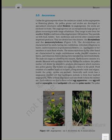Angiosperms are divided into two classes: the dicotyledons and the monocotyledons. The dicotyledons are characterized by seeds having two cotyledons, reticulate venation in leaves and tetramerous or pentamerous flowers, i.e. having four or five members in each floral whorl. The monocotyledons are characterized by single cotyledon seeds, parallel venation in leaves and trimerous flowers having three members in each floral whorl.